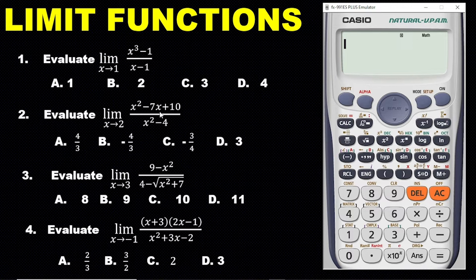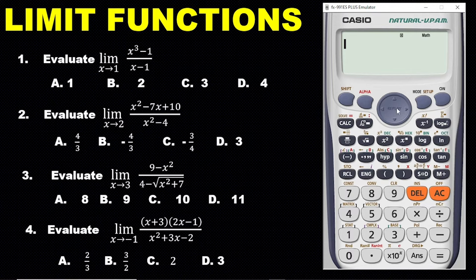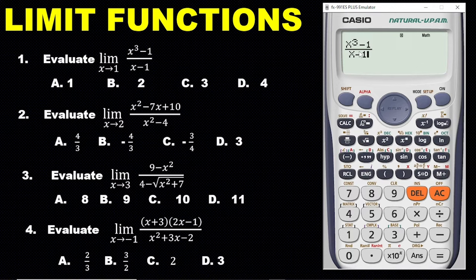Let's solve the first question: evaluate the limit of s cubed minus one, all over s minus one. This expression is a fraction, so we are going to enter it on the calculator without the limits. Click the fraction button, then enter s cubed: alpha x cubed minus one on top. Go down and enter alpha x minus one on the bottom.